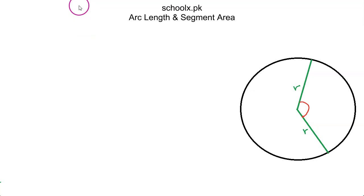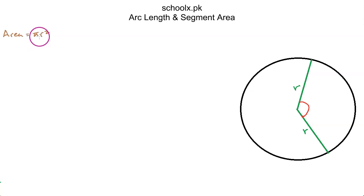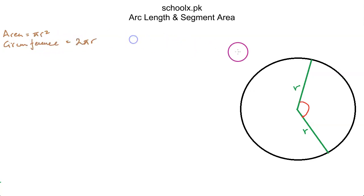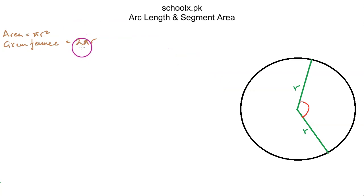The area of a circle is πr², the area of a semicircle is πr²/2, and the area of a quarter circle is πr²/4, where r is the radius and π is either 22/7 or 3.142. The circumference of a circle is 2πr — circumference is the length covered by one complete revolution. The circumference of a semicircle is πr and of a quarter circle is πr/2.